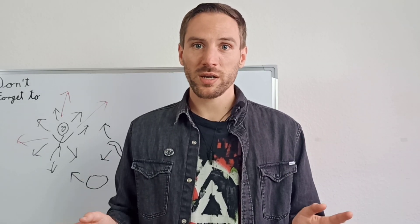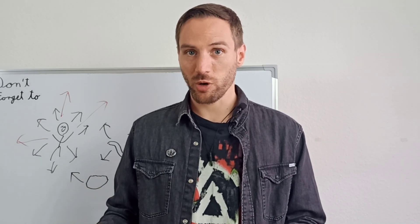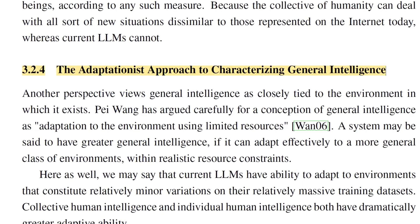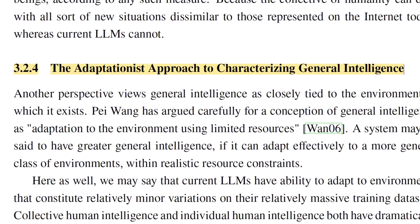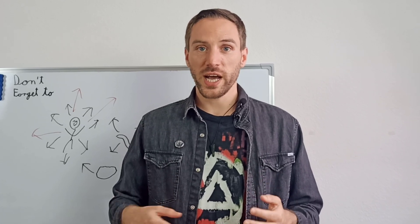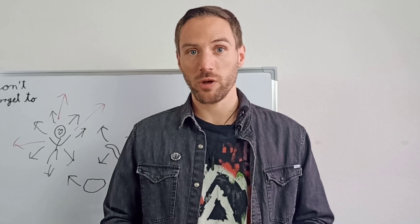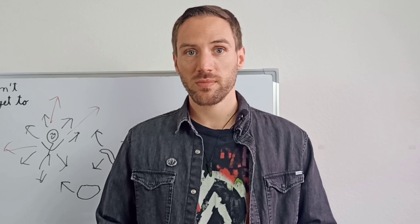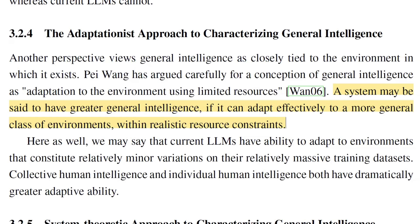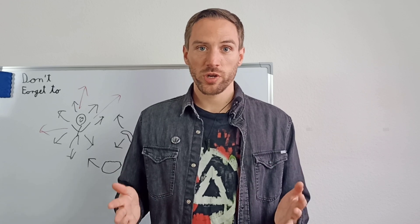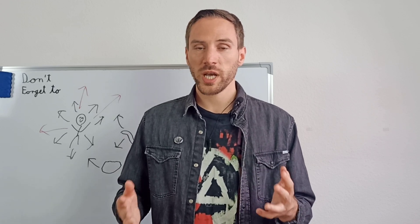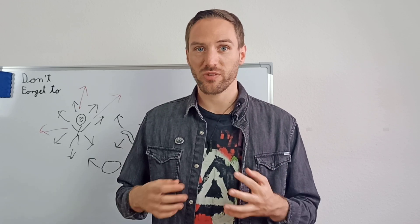After the mathematical part, let's move on to a biological approach — the adaptationist approach to characterizing general intelligence. I personally really like this approach because it's very practical and based in evolutionary development. As the paper states, a system may be said to have greater general intelligence if it can adapt effectively to a more general class of environments within realistic resource constraints. Adapting to different or changing environments is what kept any species around on this planet.